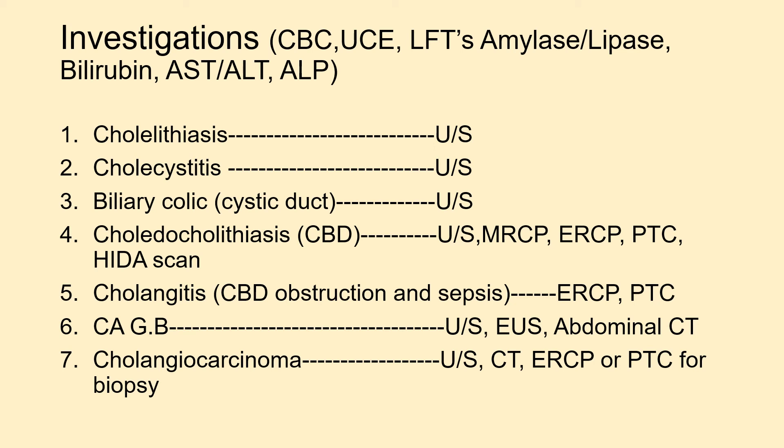For carcinoma of the gallbladder, ultrasound is done first; endoscopic ultrasound is the best option, followed by abdominal CT. In cholangiocarcinoma, ultrasound and CT are used, and ERCP or PTC are done for biopsy.